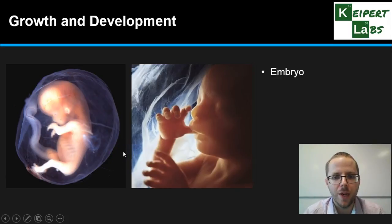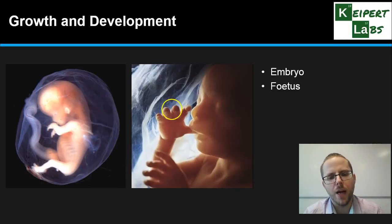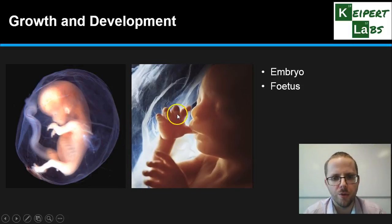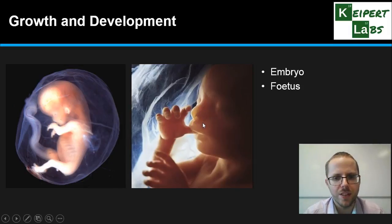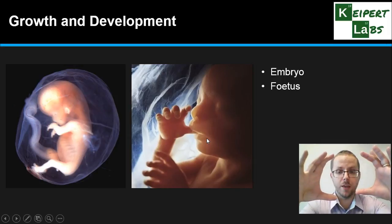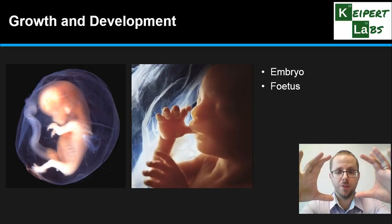Once we get past the eight-week mark, we call it a fetus, and it will be referred to as a fetus right up until the moment it is born. The image on the right shows a fetus at a much later stage of development, with all systems continuing to develop inside, continually nourished by the placenta, which grows alongside the baby.